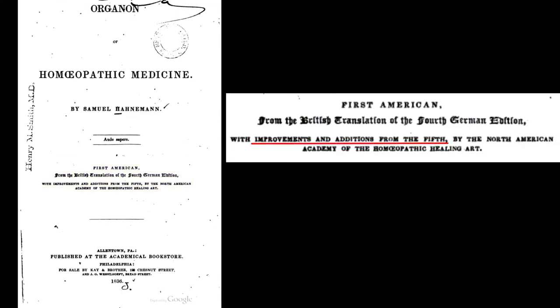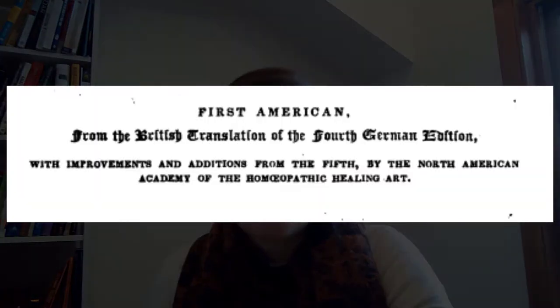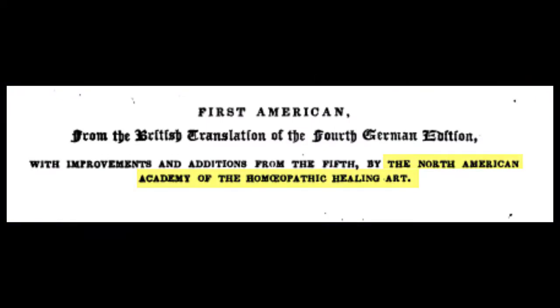It gets a little murky here. Because the fifth edition had been published by this point, the Americans added things they felt were missing from the fourth edition that appeared in the fifth — essentially trying to make it a fifth edition translation. They don't name the person who did this; they cite the North American Academy of the Homeopathic Healing Art. Hering wrote the introduction to these American editions, so it's potentially Hering's translation. You will sometimes see an Organon with Hering's name on it — those are these American editions, which are actually Devriant's translation with additions by the North American Academy.